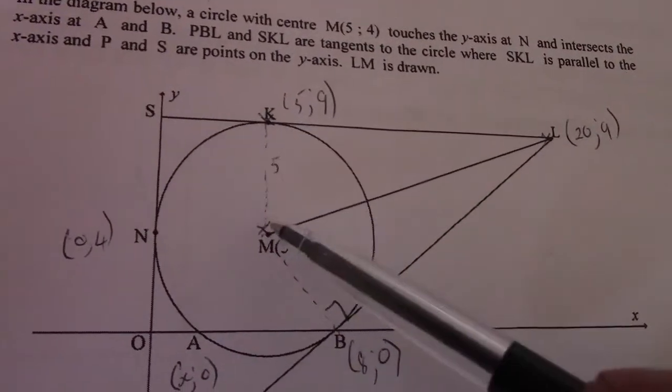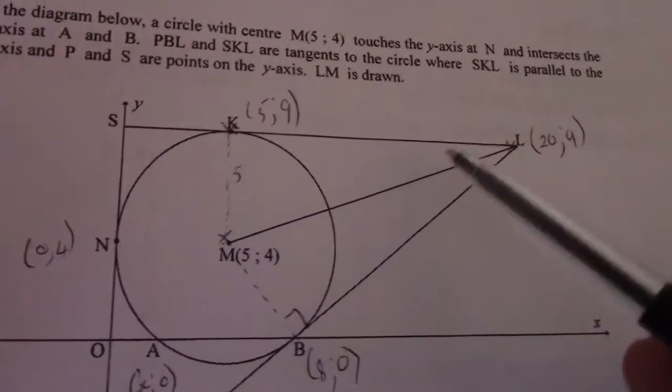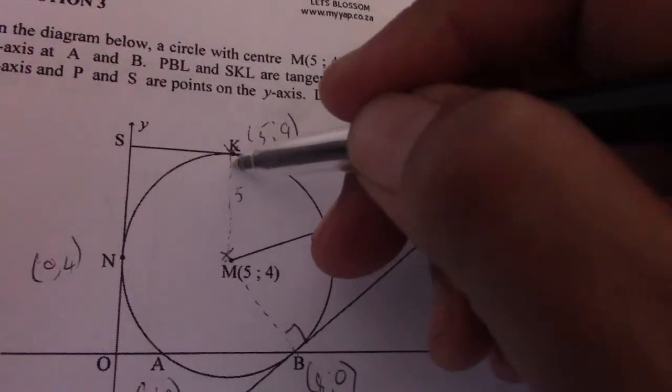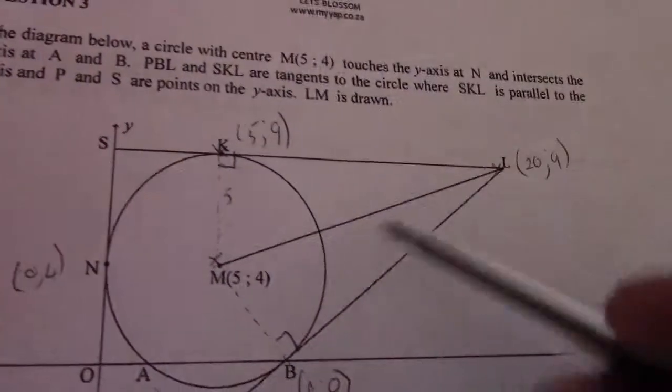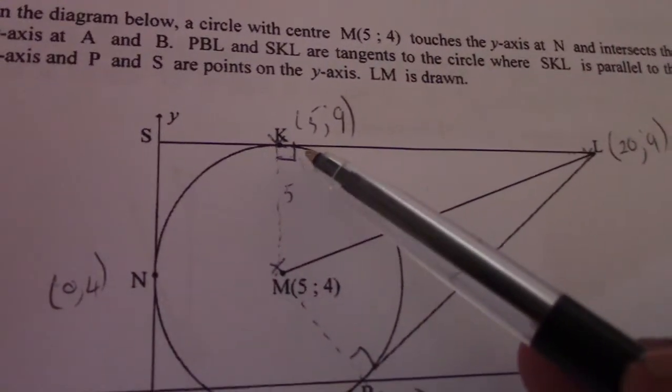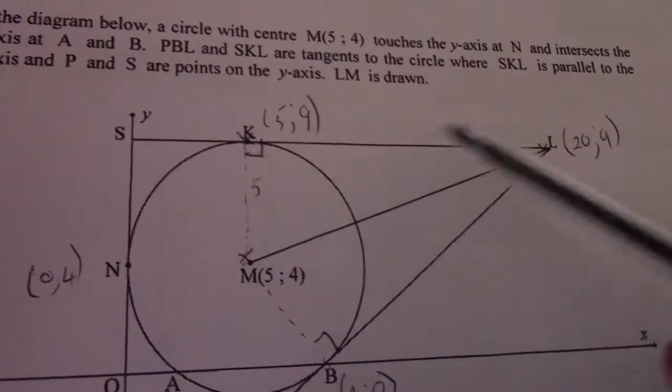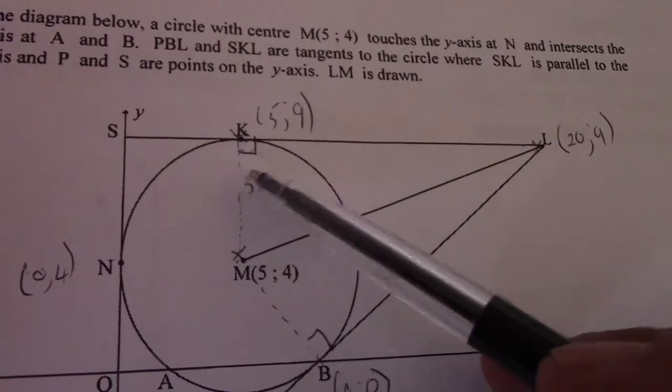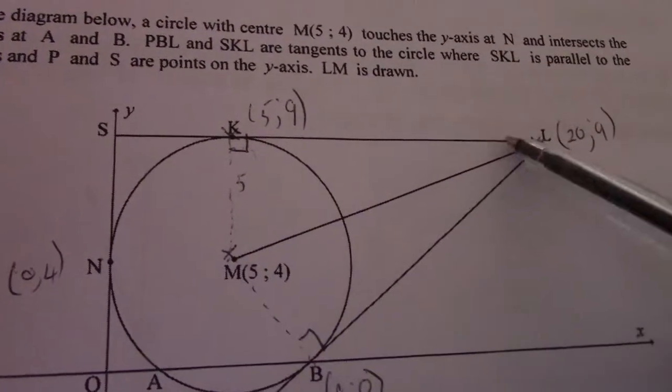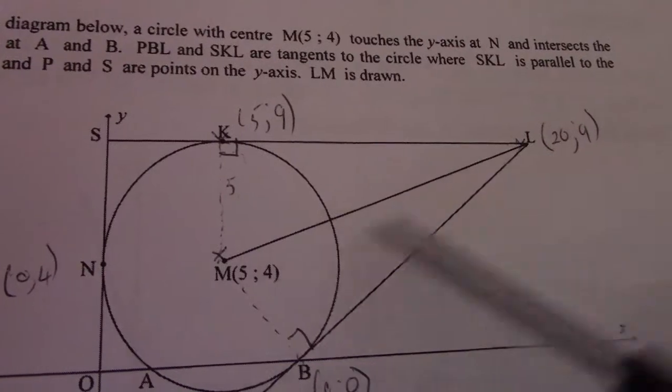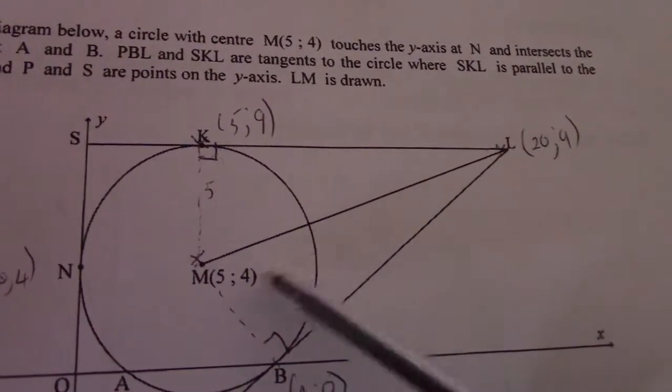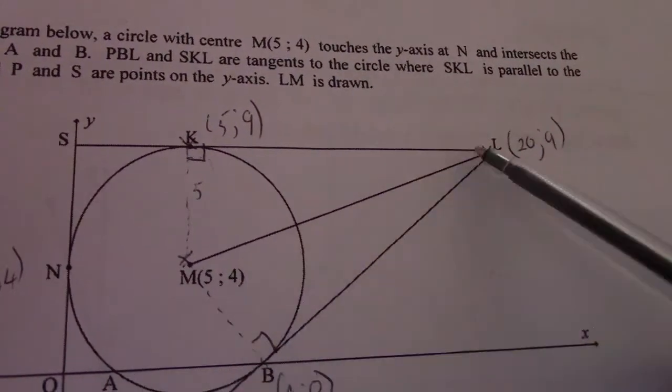Now remember MK is a radius and SKL is a tangent. So there is a 90 degree angle formed in the top right. Now you should know according to theorem 3B, an angle of 90 degrees at the circumference is subtended by a diameter. So ML would then be the diameter of this new circle.